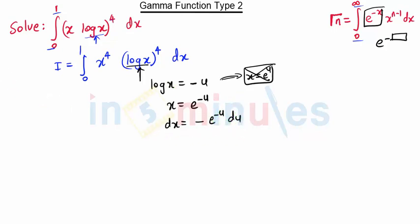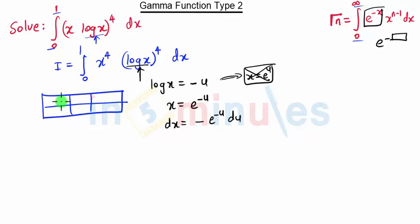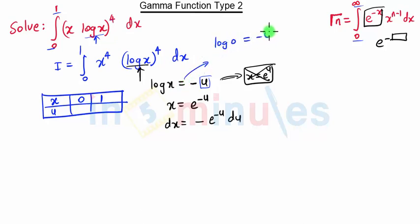Then dx will be minus e raised to minus u, du. Since we are changing the variable, our limits of integration will also change. The initial variable is x and the new variable is u. When we put x equal to 0 in the equation log of x equals minus u, we get log of 0 equals minus u. Taking the minus sign inside the log, we get log of 1 upon 0 equals u.